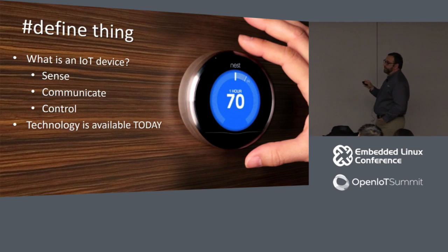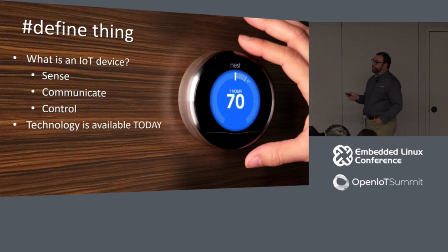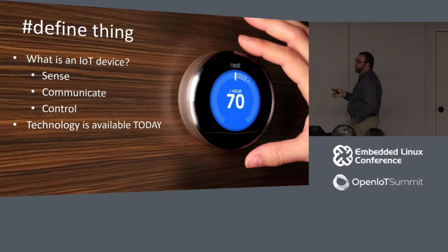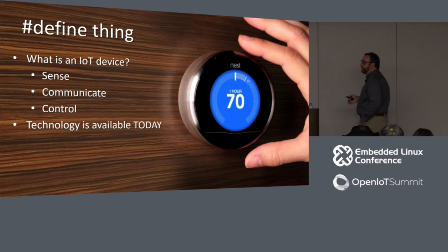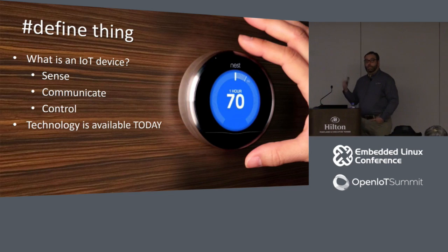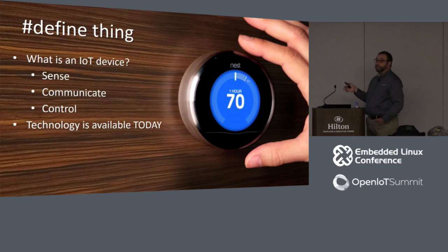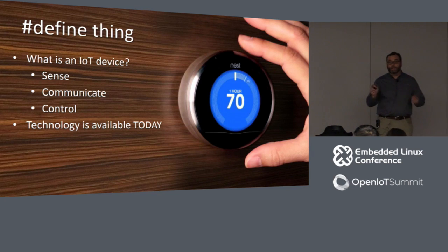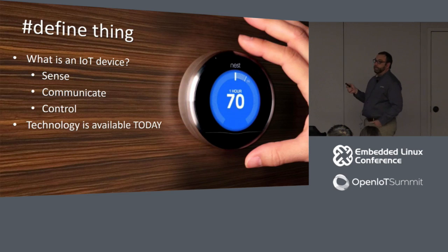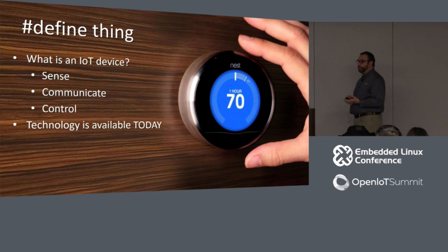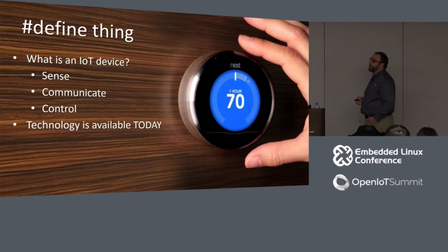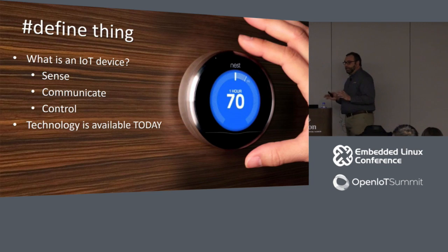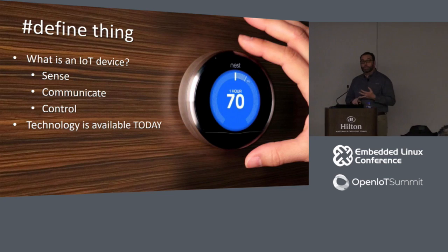The Nest thermostat is installed in my hallway — I love it, I paid way too much money for it. It's got a motion sensor to know if I'm in the house, a temperature sensor built into it. It uses that information to communicate over the Internet to the Nest cloud to figure out what temperature I like. If the temperature is outside my configured set point, it performs control — it flips on my air conditioning or heater using an electrical signal. That's an Internet of Things device: it senses, it communicates, and it controls something in the real world.